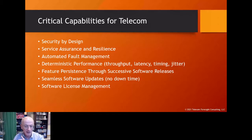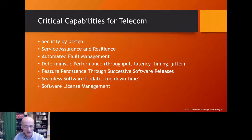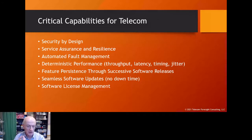We want automated fault management. These are vast-scale infrastructures, so if anything goes wrong we need to detect it quickly and remedy it automatically — preferably without manual intervention. For telecommunications we also want deterministic performance: the throughput we promised customers, low latency end-to-end, and controlled jitter, which refers to timing variations in small intervals of time.